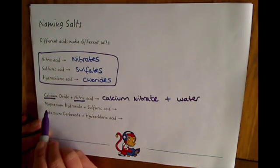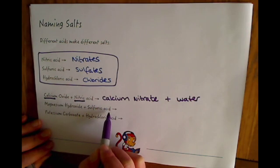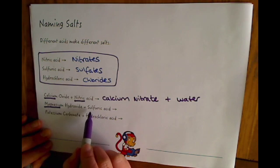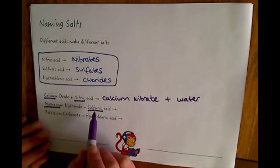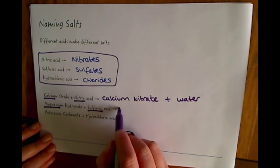In this example we've got magnesium hydroxide plus sulfuric acid. So we take the metal from this part, magnesium, and we make magnesium sulfate plus water.